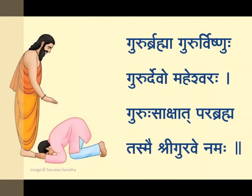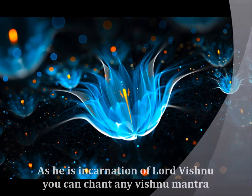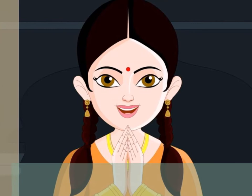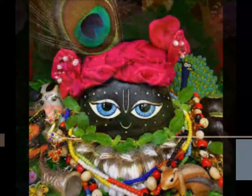I will share a powerful Saligram mantra. First chant the Ganesh mantra: Om Shreem Hreem Kleem Glaum Gam Ganapataaye Namaha. Then chant the guru mantra: Guru Brahma, Guru Vishnu, Guru Devo Maheshwara, Guru Sakshat Para Brahma, Tasmai Shri Guruve Namaha. As Saligram is the incarnation of Lord Vishnu, you can chant any Vishnu mantra. The worship begins with: Shuklaambara dharam Vishnum, Shashivarnam chatur bhujam, Prasanna vadanam dhyayet, Sarva vighna upashaantaye. Then: Shantakaram bhujagashayanam, Padmanaabham suresham, Vishvaadhaaram gaganasadrasham, Meghavarnam shubhaangam, Lakshmikaantam kamalanayanam, Yogibhir dhyaana gamyam, Vande Vishnum bhavabhayaharam, Sarvaloka ekanatham.